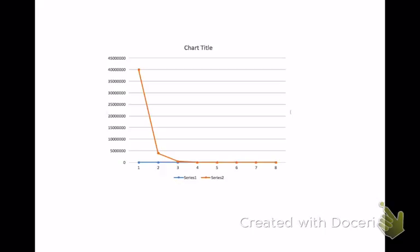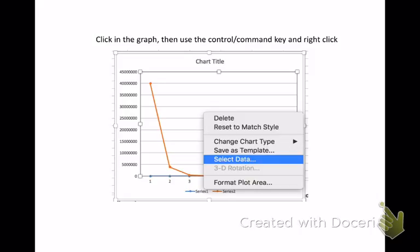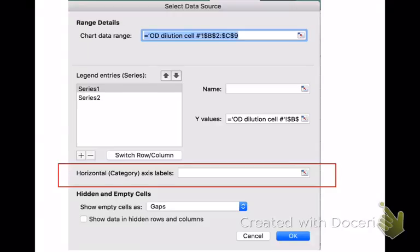This is what the graph looks like after I get it. And you'll notice that all it's giving me is Series 1 and Series 2. The horizontal axis is not correct at this point, so we're going to have to go back and tweak this quite a bit. The first thing that we're going to do is actually click on the graph, and then using your Command or Control key and a right-click, you will get this window, and what you want to do is select data. That's how we're going to be able to go in and manipulate Series 1 and Series 2, and we'll be able to change the X-axis.